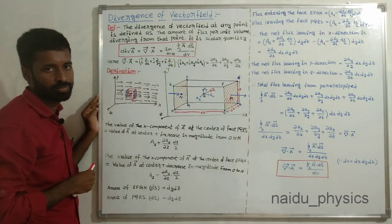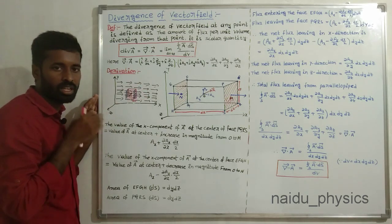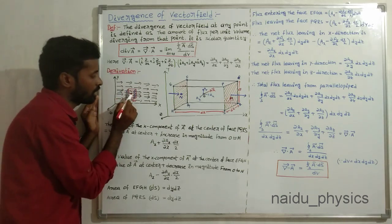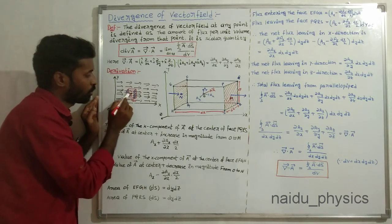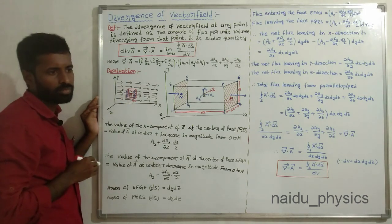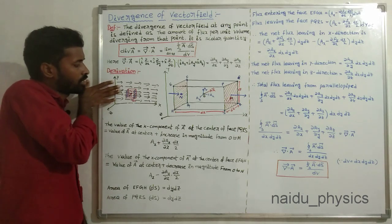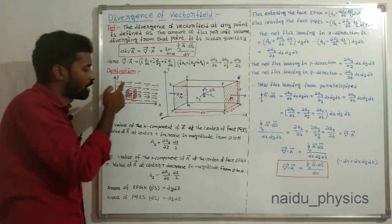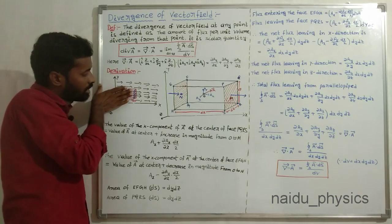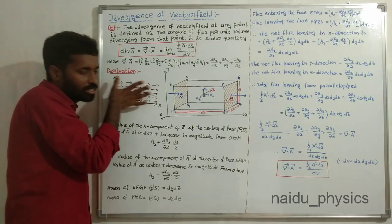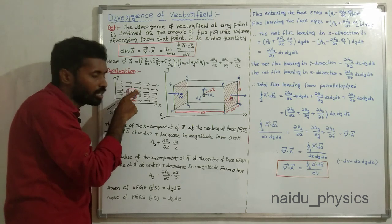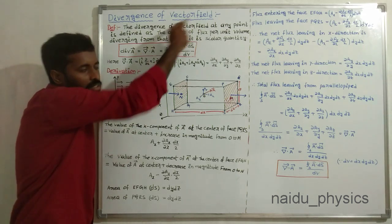Let us see the derivation. Consider a vector field with field lines passing along the x-axis, y-axis, and z-axis. Now consider a point in this field to understand the divergence at that particular point. Around this point we consider an elementary volume dv. Suppose field lines pass through the x-axis, meaning normal to the y-z surface — field lines entering and field lines leaving. How much flux will diverge per unit volume is the divergence of the vector field.